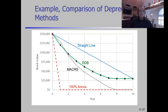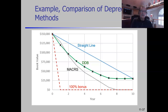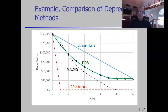Depreciation reduces taxes upfront at the cost of paying more taxes later - but since money in the future is worth less than money today, paying more taxes in the future rather than today means we net less taxes on a present value basis. Conceptually, 100% bonus depreciation is the fastest, MACRS is better than straight line, and 100% bonus depreciation is better than MACRS.